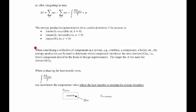We can use entropy production to determine where irreversibility is occurring. In problems with a collection of components — for example, a power cycle with a turbine, condenser, pump, and boiler — if we apply the entropy equation to each component and look at the entropy production term for each, where entropy production is largest tells us which device is contributing the most irreversibility.